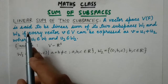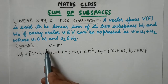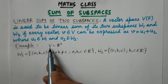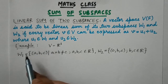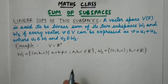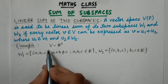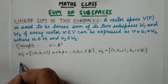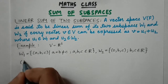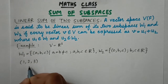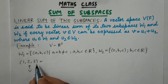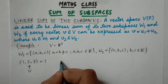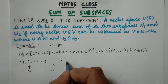According to the linear sum, every vector of V can be written as the sum of elements from its two subspaces W1 and W2. Let's take the element (1, 2, 3) belonging to V and write it as the sum of elements from W1 and W2.